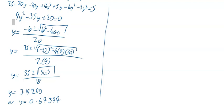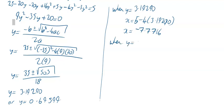You've got the y values. What you then have to do is find the corresponding x values. So just say when y is equal to 3.19290, x is equal to 5 minus 4 times 3.19290. That means your x is equal to minus 7.7716.